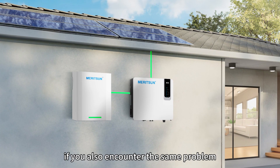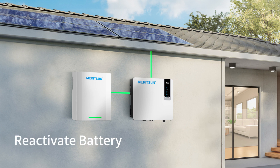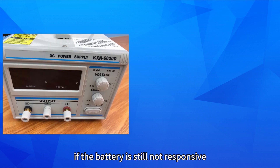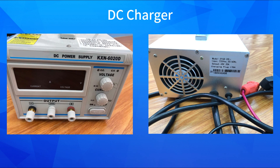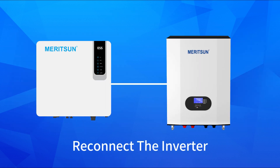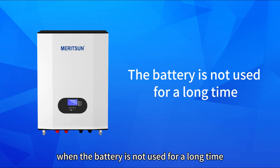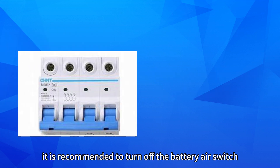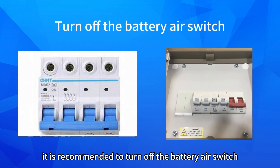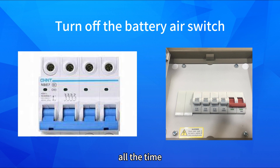If you encounter the same problem, please don't worry. You can try pressing the reset button to activate the battery. If the battery is still not responsive, you can use a DC battery charger to charge the battery until the voltage recovers and it can be reconnected to the inverter. It is worth noting that when the battery is not used for a long time, it is recommended to turn off the battery air switch to avoid the battery being in a constant state of power consumption.